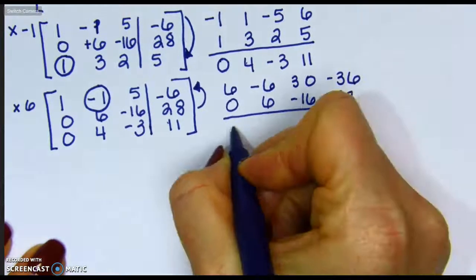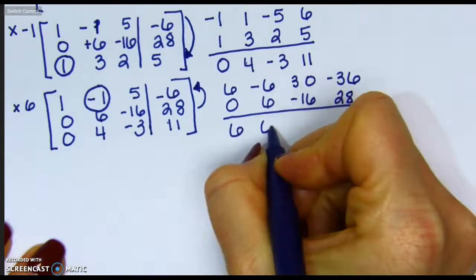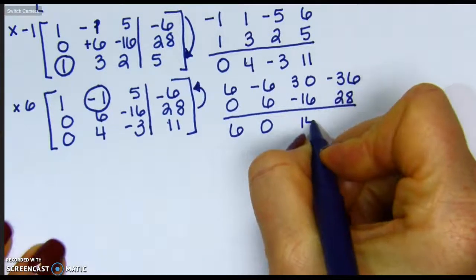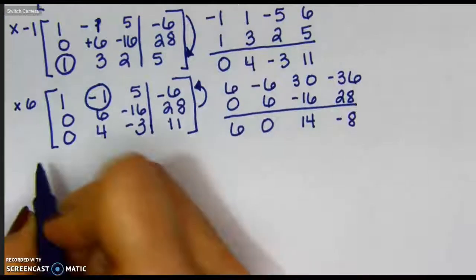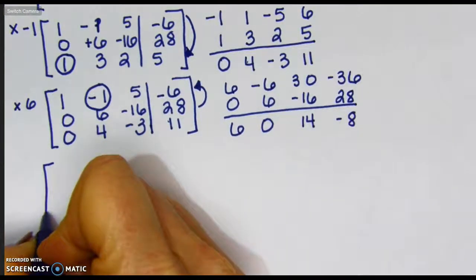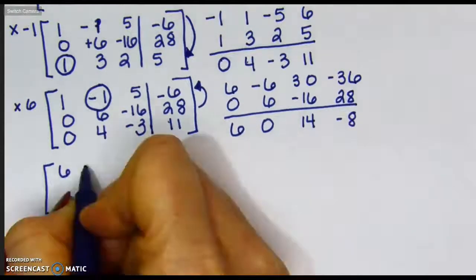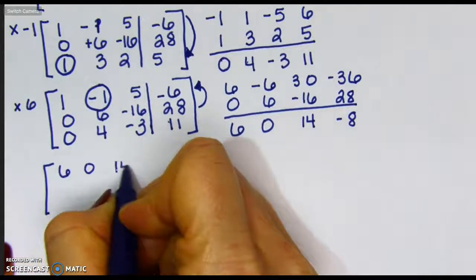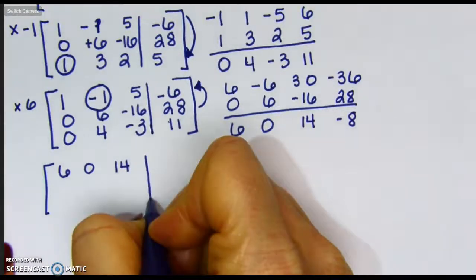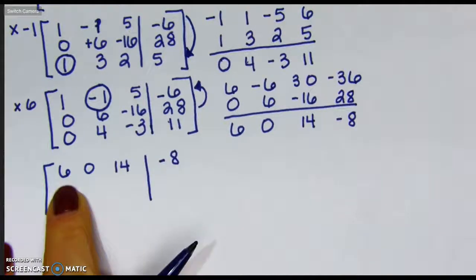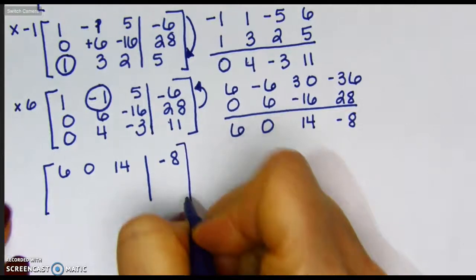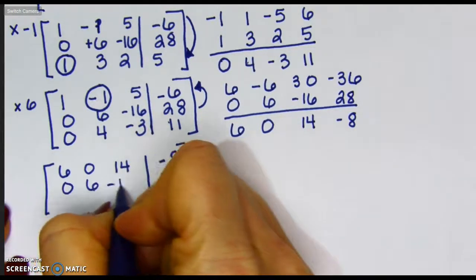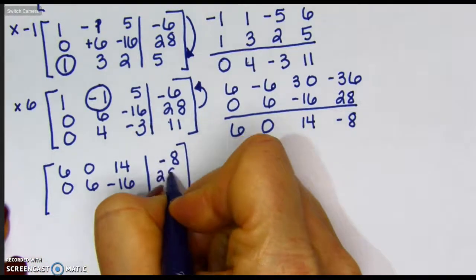Adding these together, I have 6, 0, 14, and negative 8. So I'm going to replace my top row now with 6, 0, 14, and negative 8. It's okay that this turn in from a 1 to a 6. We'll come back and manipulate that at the very end, just as long as our 0s stay where we need them to be for now.